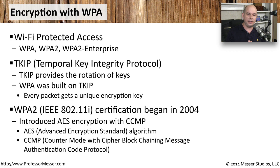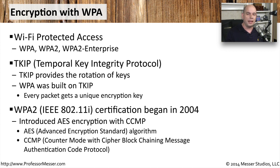AES is the Advanced Encryption Standard algorithm that handles much of the encryption, and it's combined with CCMP — Counter Mode with Cipher Block Chaining Message Authentication Code Protocol. We hardly call it that because it's so many words. You most often see it referred to when setting up your wireless network as WPA2, and in parentheses it might say TKIP, or AES and CCMP.